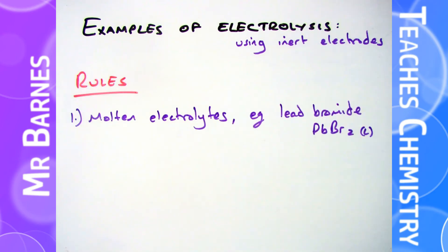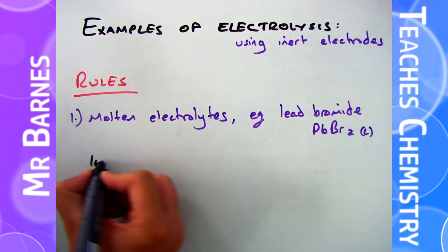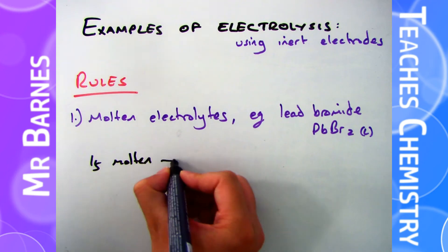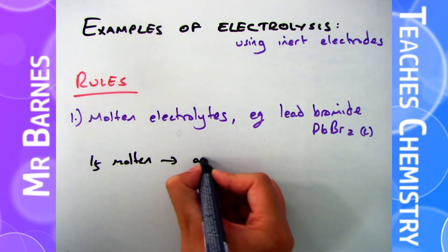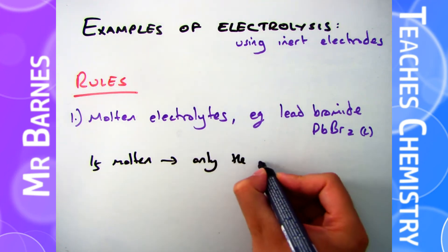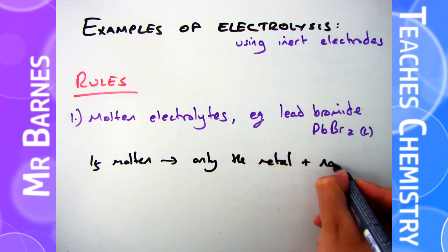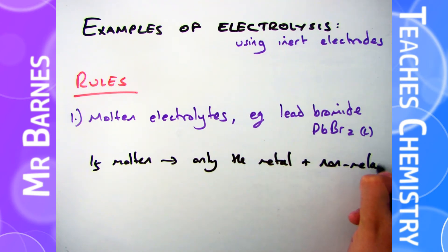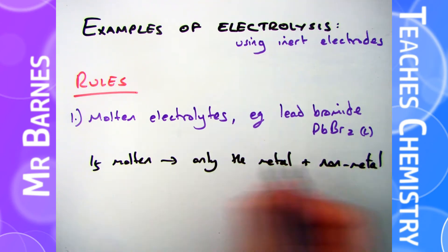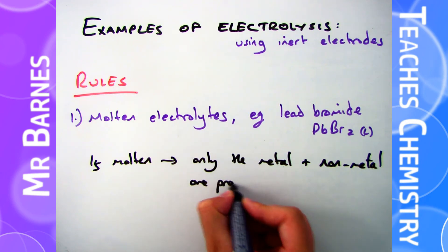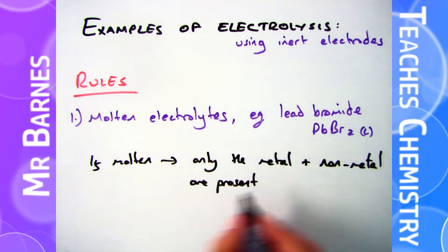The first rule you need to know when figuring out what is produced at the different electrodes is if you have a molten electrolyte - for example lead bromide which has been melted. The key thing here is if it's molten you will only have two things, which in this case will be the metal and the non-metal. So for lead bromide you will have lead and bromine - they're the only two things that can be produced.